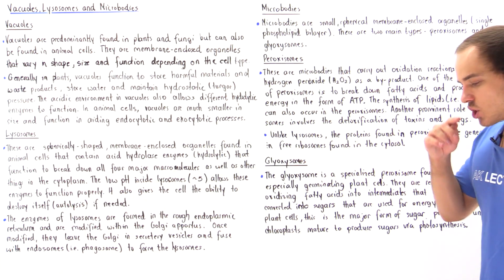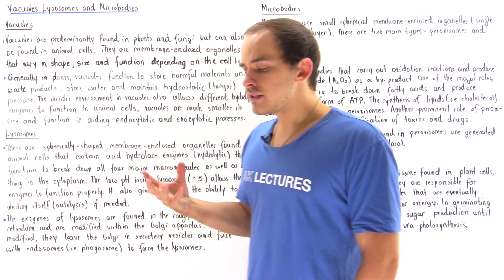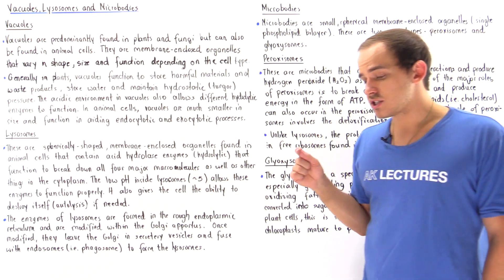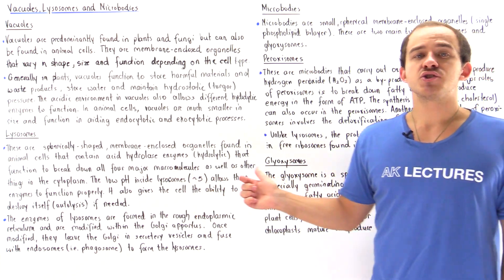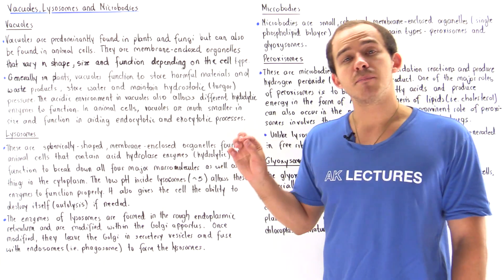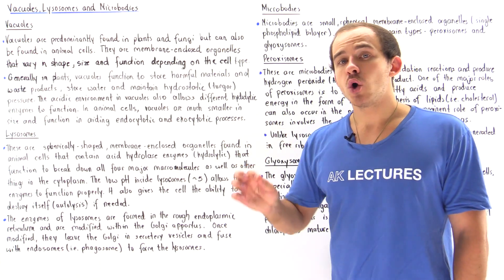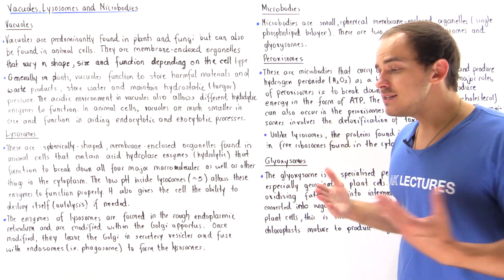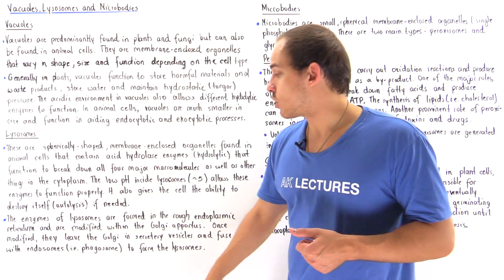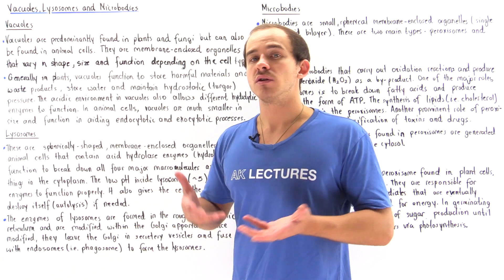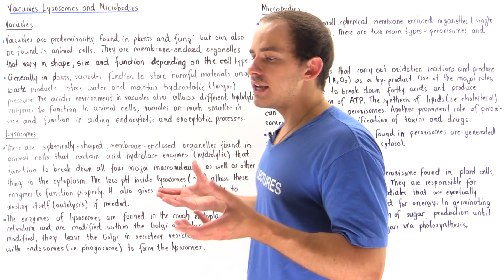The enzymatic proteins inside lysosomes are produced in the rough endoplasmic reticulum. Once produced, they travel through the smooth endoplasmic reticulum and eventually reach the Golgi apparatus. The Golgi apparatus modifies those hydrolytic enzymes and then releases them inside secretory vesicles, which fuse with endosomes — such as phagosomes — to create our lysosomes.